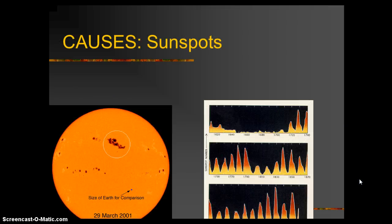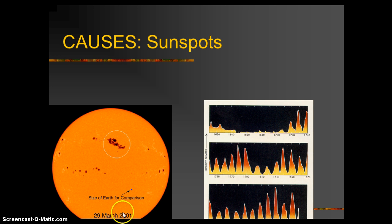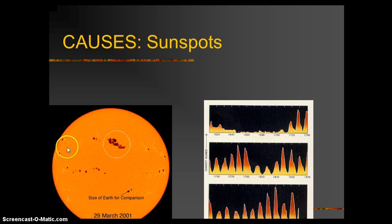Sunspots are an indication of sun energy. This image was shown of the surface of the sun in 2001. This little blue dot is an Earth comparison, just so you can see how big the sun is and how big these sunspot areas are.